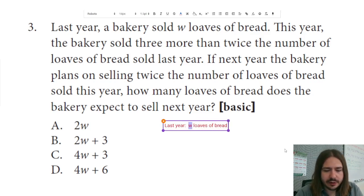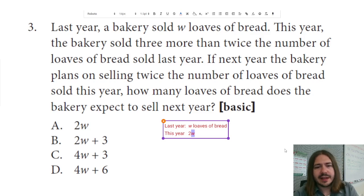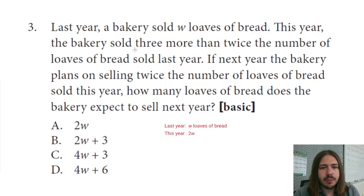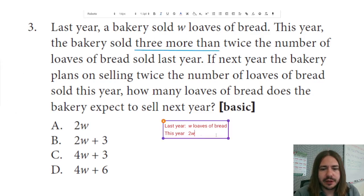And then this year, I'm going to keep track of this as I read it. This year the bakery sold three more than twice the number of loaves of bread sold last year. So if it was twice the number of loaves of bread as last year, it'd be 2W, but it does say three more than twice the number of loaves of bread. The three more than is going to be a plus three. Okay, so that's the expression that will represent how many loaves of bread we sold this year.